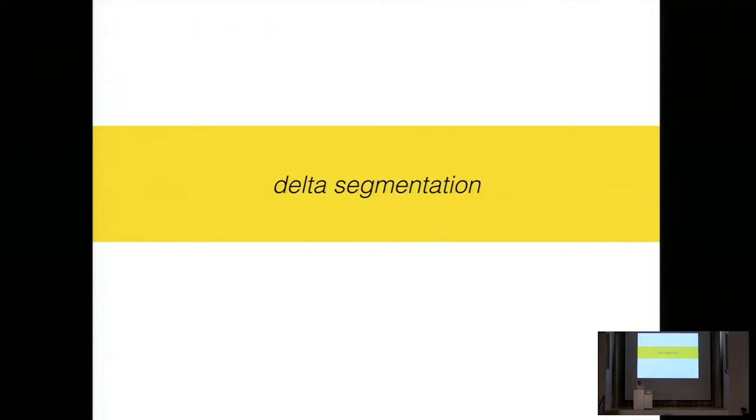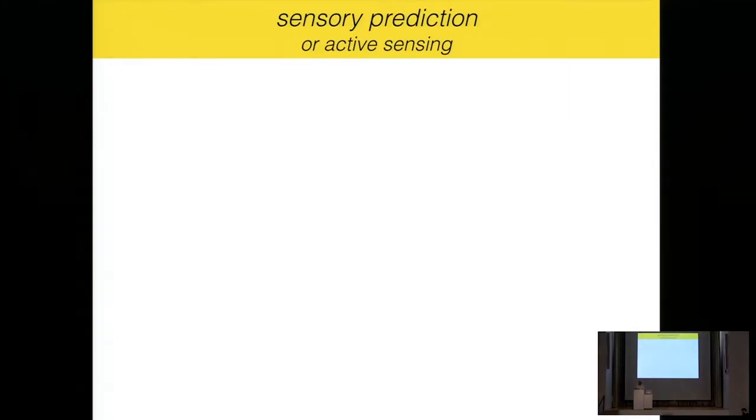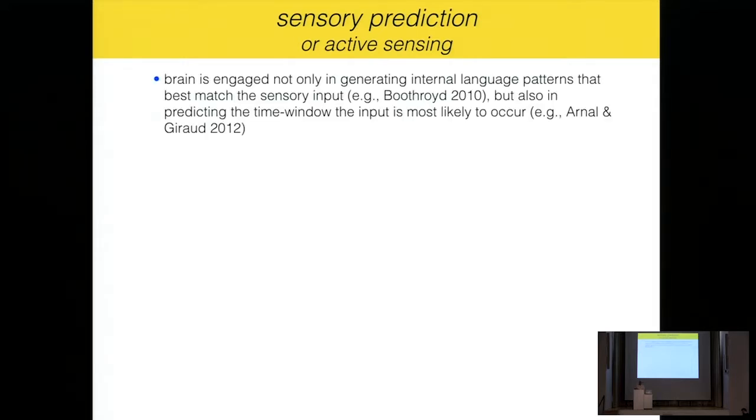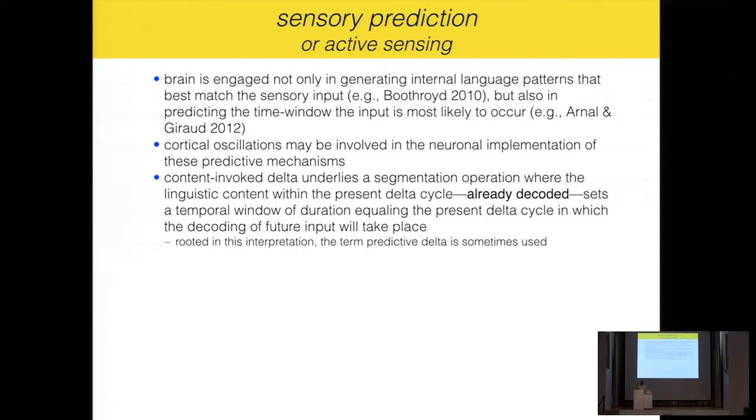And finally, do we need a theta buffer or is it an ongoing encoding? And lastly, I want to bring Etty Chang's ecodata that shows gamma correlated with features, acoustic phonetic features that he finds. So, it's a very interesting thing to follow. So, from now, I would like to move to theta segmentation and to start with the notion of sensory prediction or active sensing. In that framework, the assumption is that brain is engaged not only in generating language patterns, but also in predicting time window that the input is more likely to occur for the next decoding.